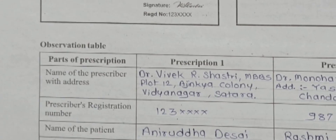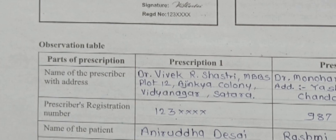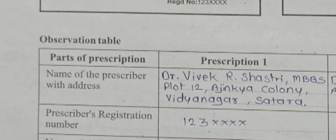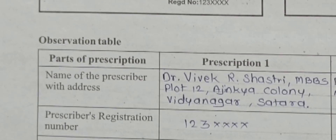Now for prescription one — the first part: name of the prescriber with address. So here the physician's name is Dr. Vivek Shastri MBBS, and the address is mentioned. Then the prescriber's registration number — here you can see 123 — and below that is the prescriber's signature symbol.